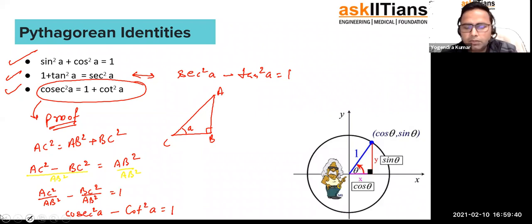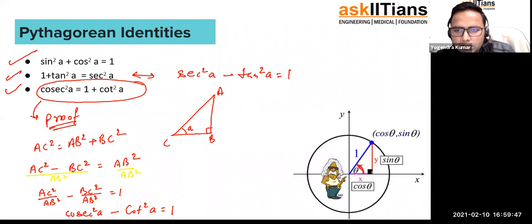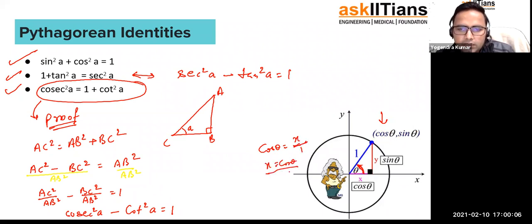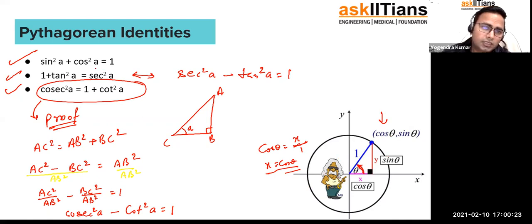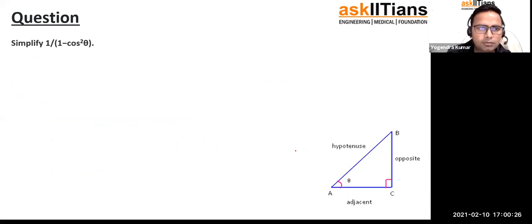We can also show this relation using a unit circle. If this angle is θ, then x and y coordinates on the unit circle represent cos θ and sin θ respectively, because cos θ = base/hypotenuse = x/1, so x = cos θ, and y = sin θ. Any point on the unit circle represents this, and the first identity is quite directly related to this geometric picture.